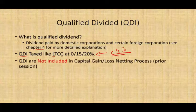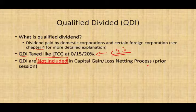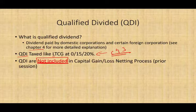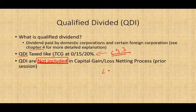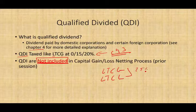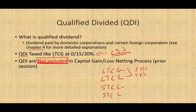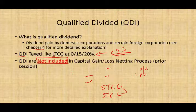Qualified dividend income is NOT included in the capital gain/loss netting process we conducted prior to this session. We netted capital gains and capital losses in that process. Qualified dividend income doesn't go into that netting. Yes, they're taxed like long-term capital gain, but when we do the netting — where we netted long-term capital gain, long-term capital loss, 25%, 28%, short-term capital gain, and short-term capital loss — qualified dividend income stays out of that process.